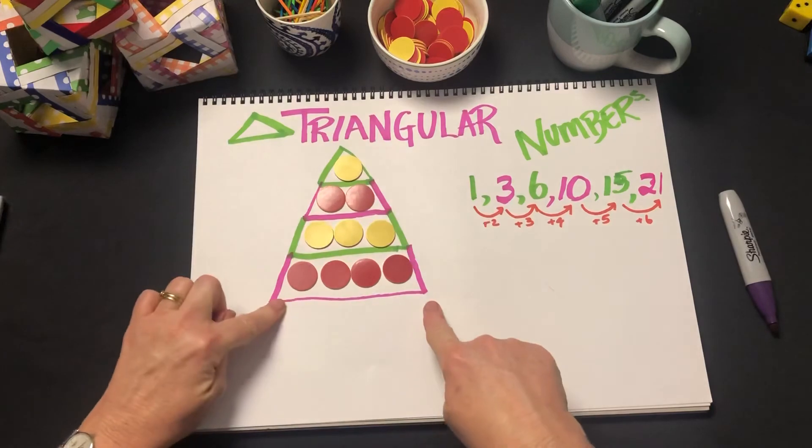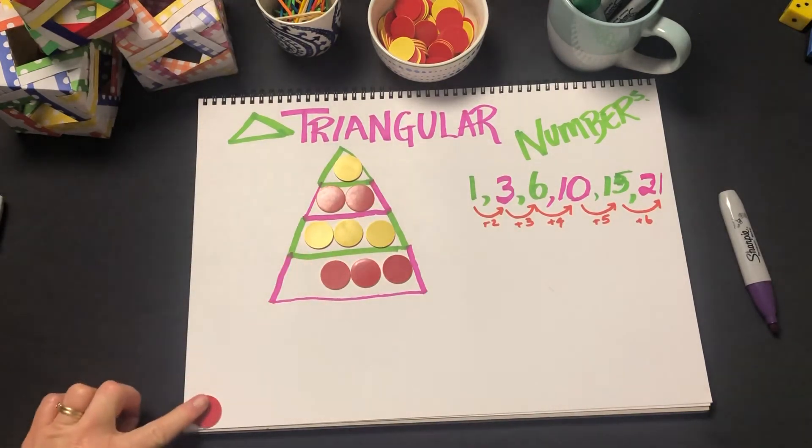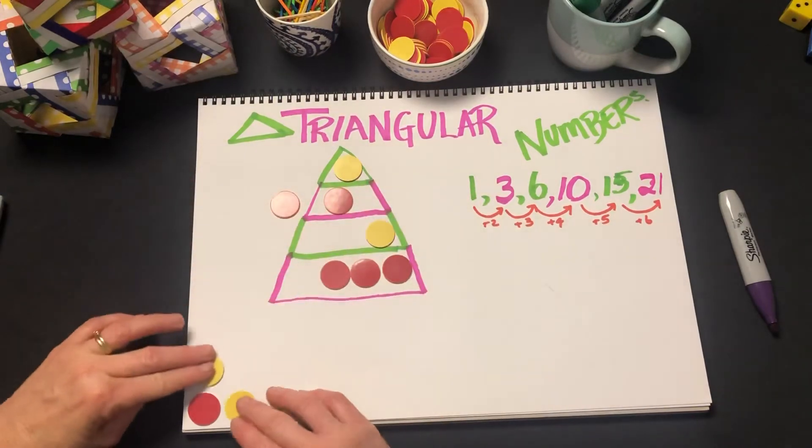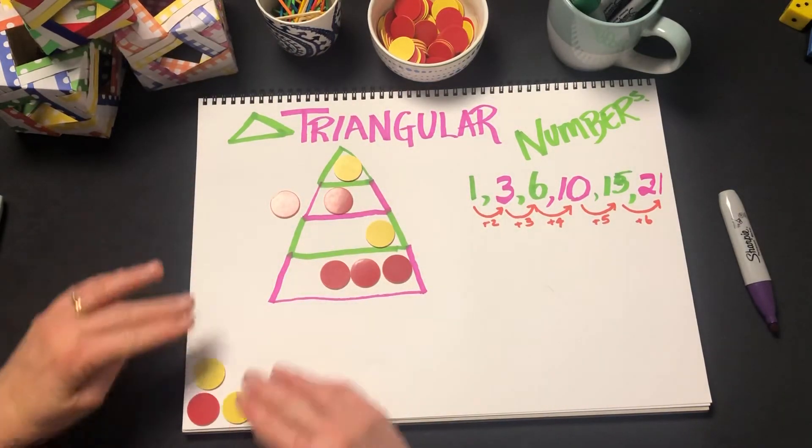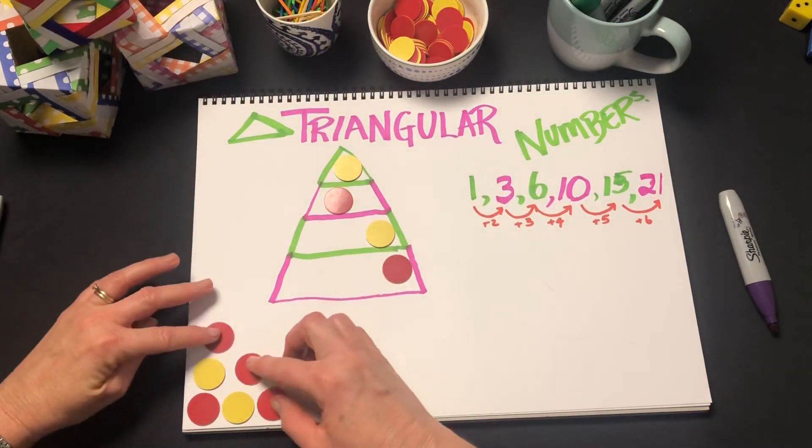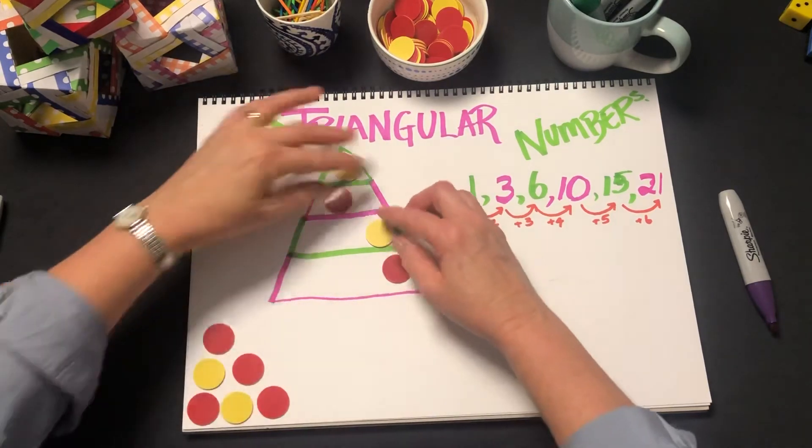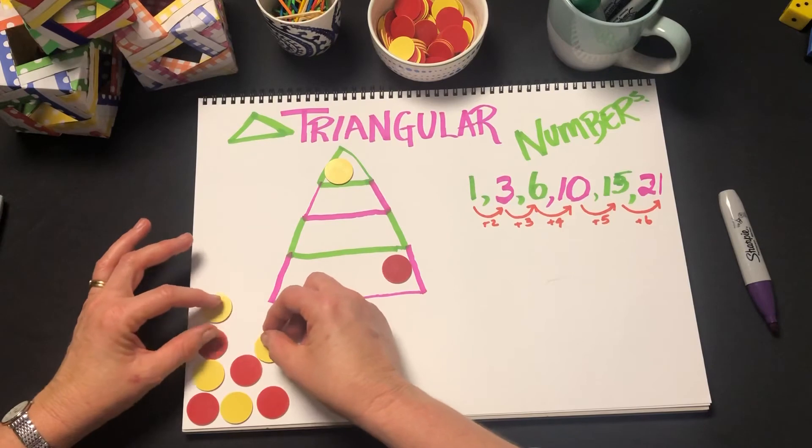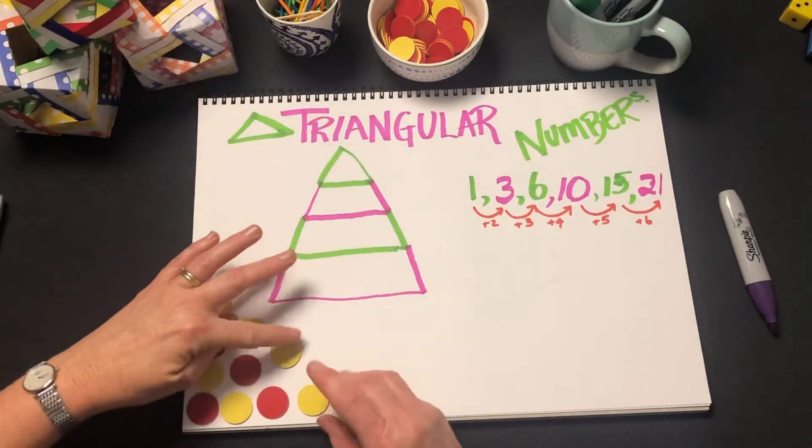Now some students won't like it drawn like this. They perhaps prefer to see it as a right-angled triangle, and that will work as well. They just get spread out a little bit more there.